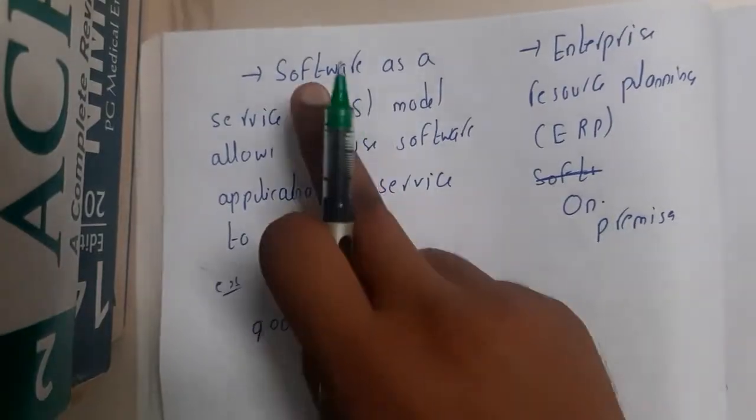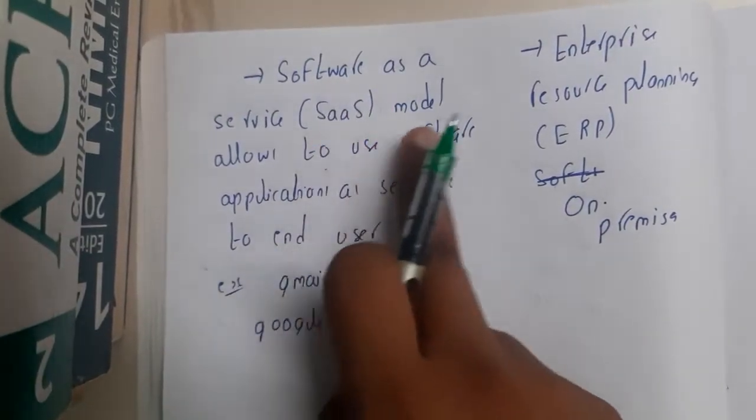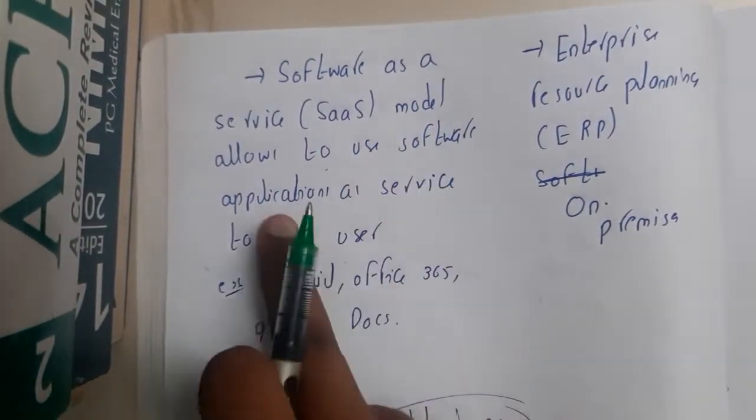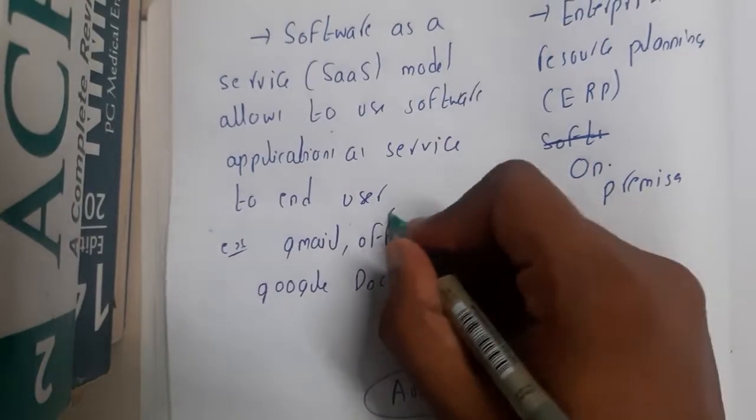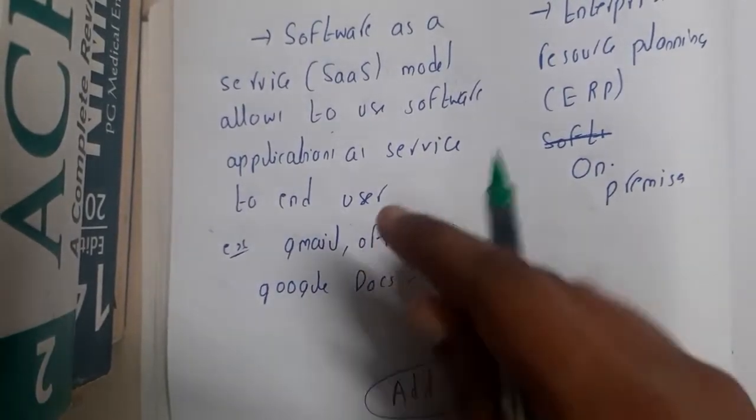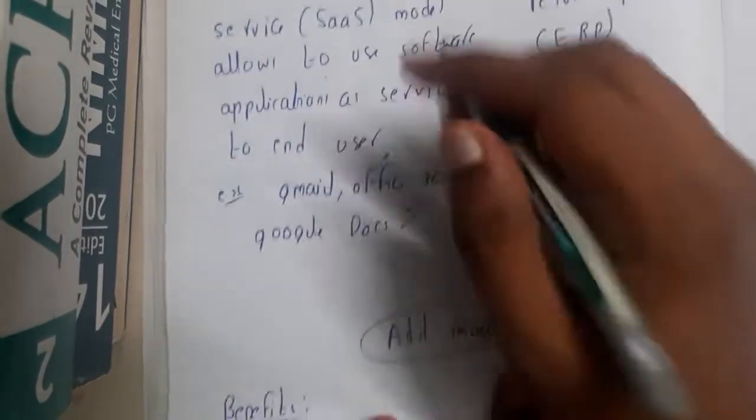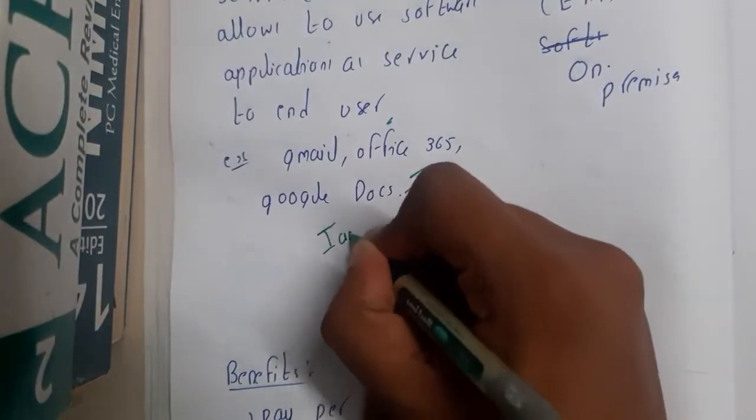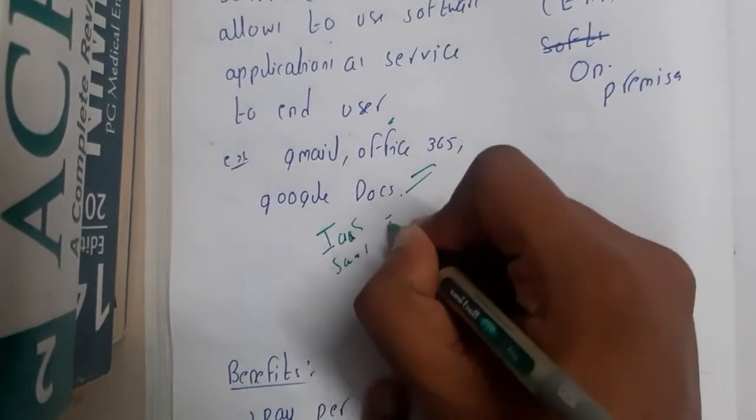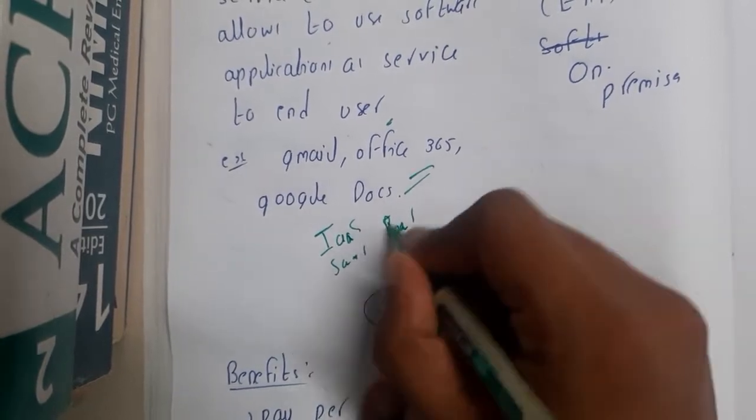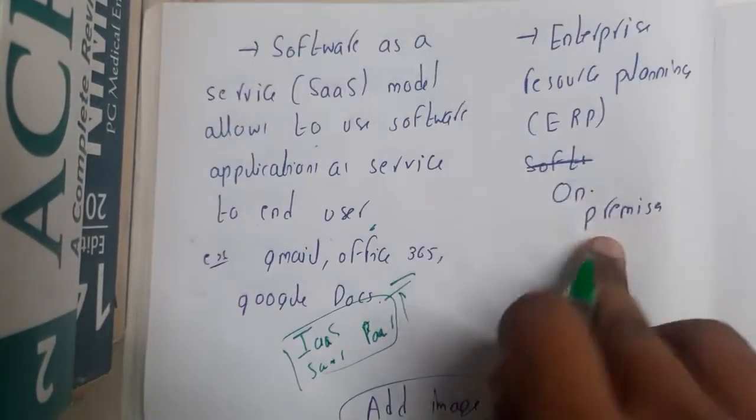Software as a service is a model that allows you to use a software application as a service to the end user. The best examples would be Gmail and similar things. We have various examples here including IaaS, PaaS - these three will be included in this category. In enterprises, we are having on-premises.